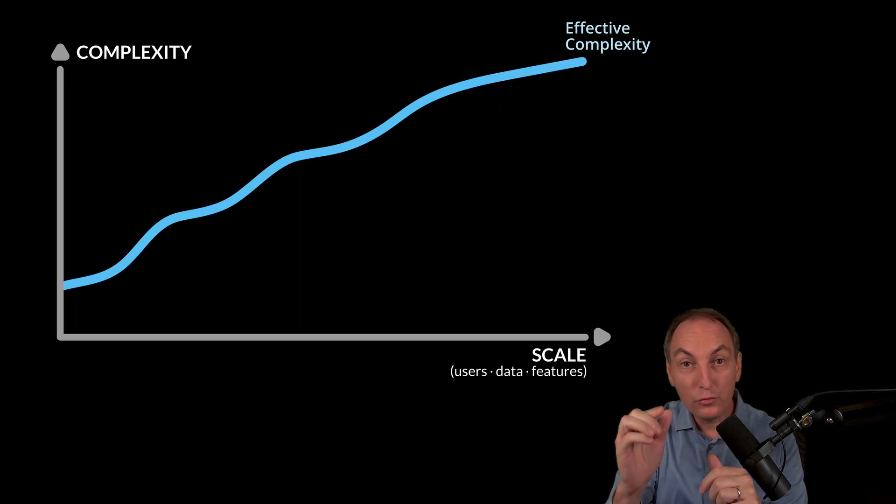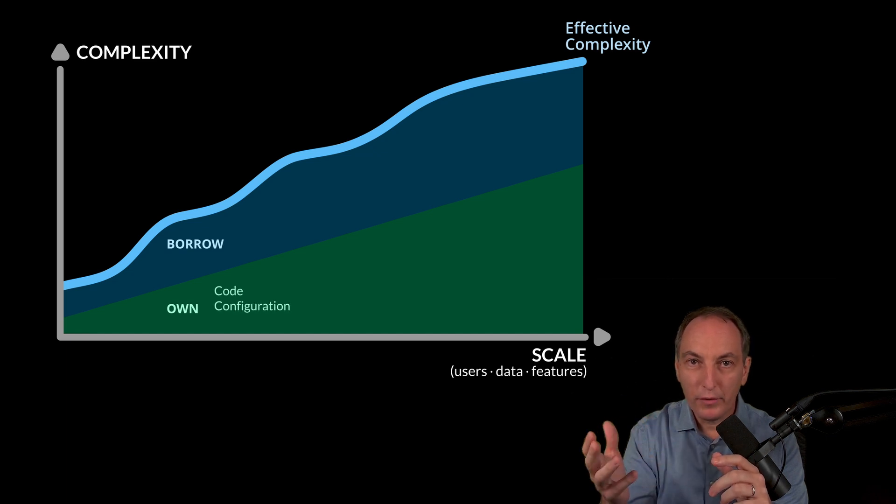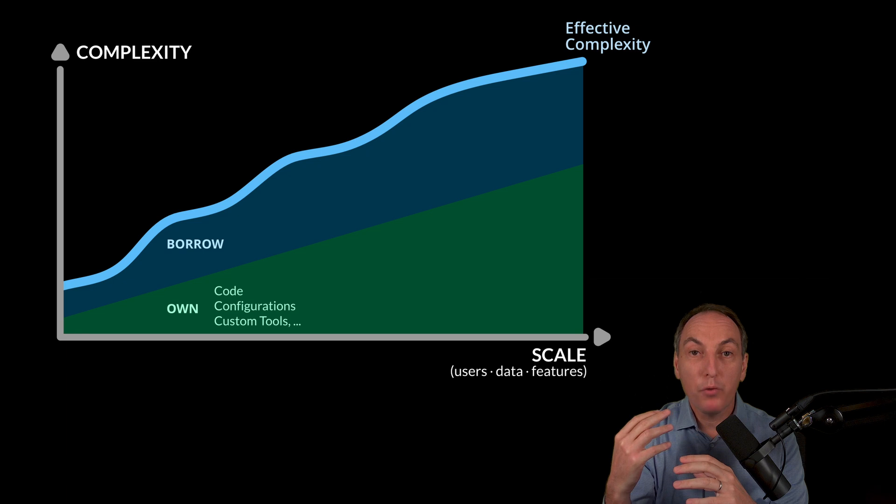Within this curve, there are two areas: there is what we own and what we borrow. What we own is our code, our configuration, our custom tools, and so on. What we borrow is our tech stack basically, so it's our libraries, frameworks, services, and so on.